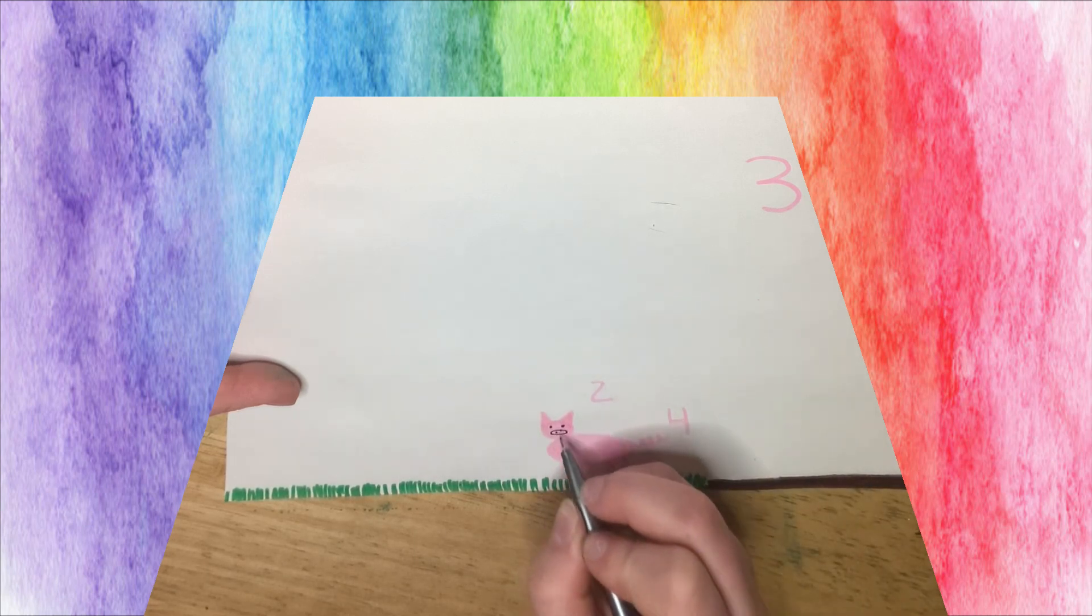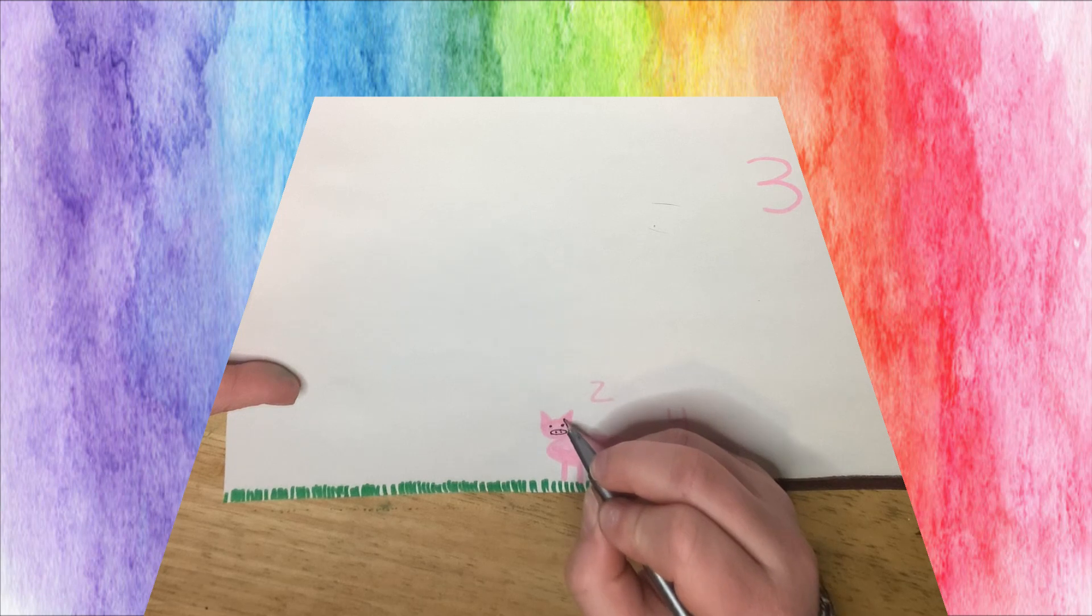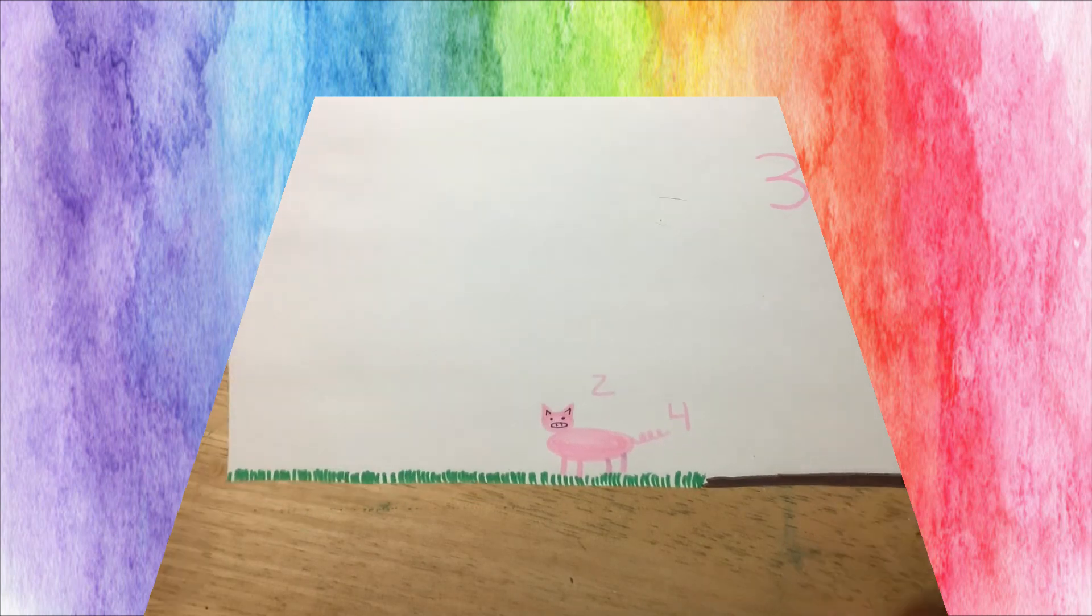One oval nose. One, two lines for our nostrils. How our pig smells. Add one, two little triangles.